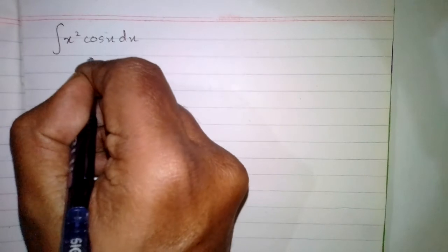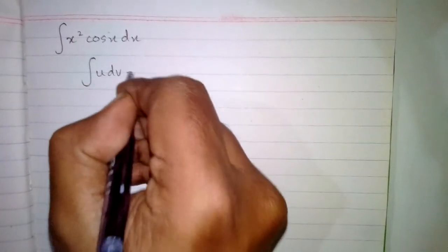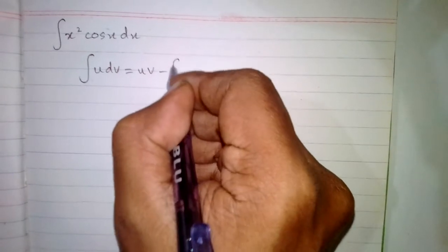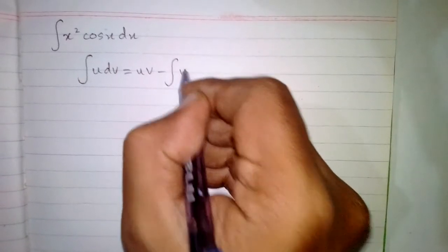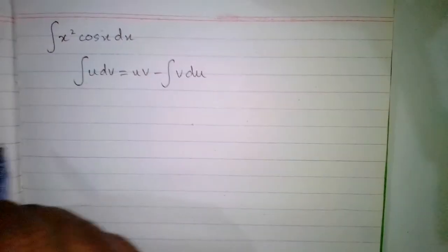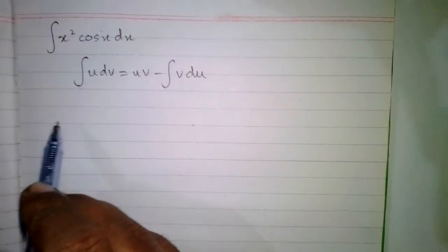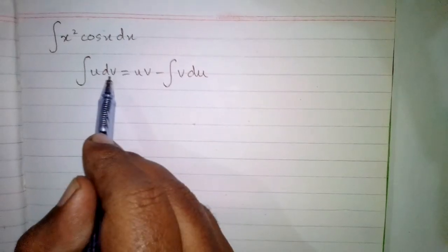In this video we will find the integral of x squared cos x with respect to x. In order to find the integral of this function we will use integration by parts, which states that the integral of u dv is equal to u times v minus the integral of v du. Now we have to decide what is u and what is dv.